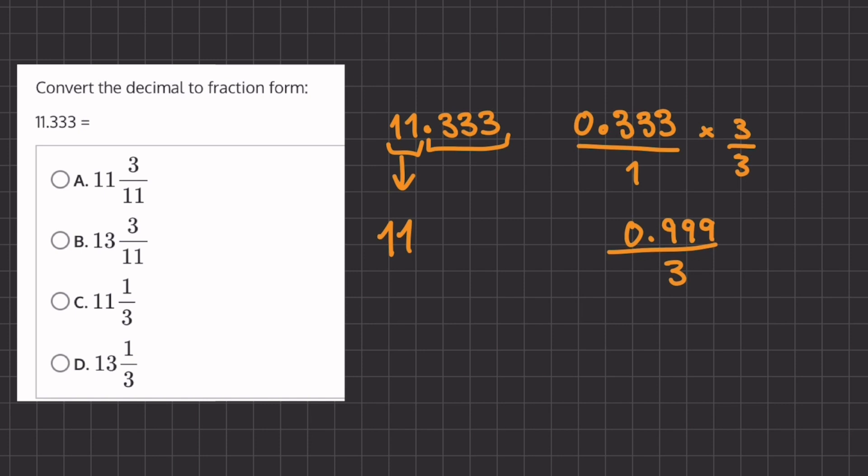Now we can say that this 0.999 is very, very close to 1. We'll keep our denominator of 3, and 1 third will be our fraction for 0.333.